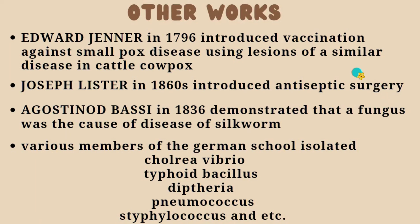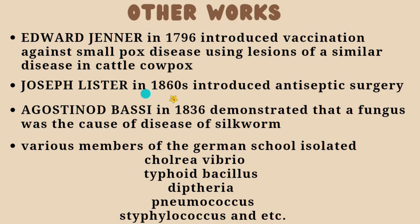Edward Jenner, in 1796, introduced vaccination against smallpox using lesions from a similar disease in cattle — cowpox. Next, Joseph Lister, in 1860, introduced antiseptic surgery.